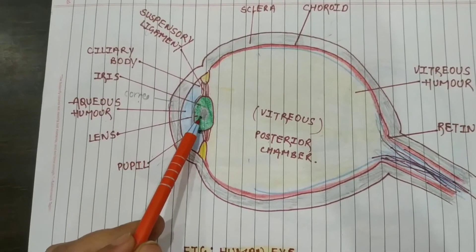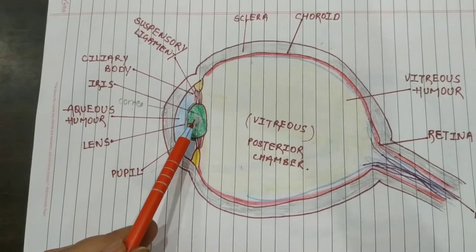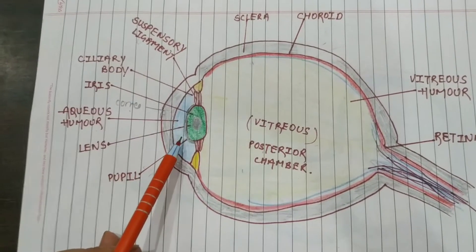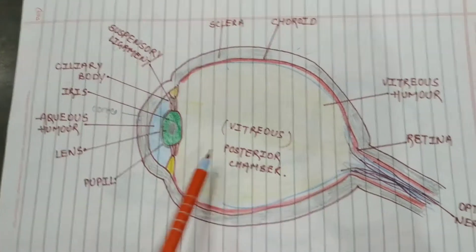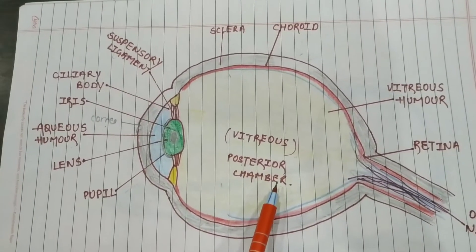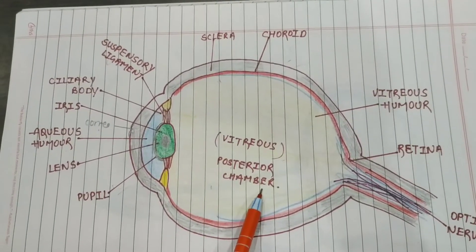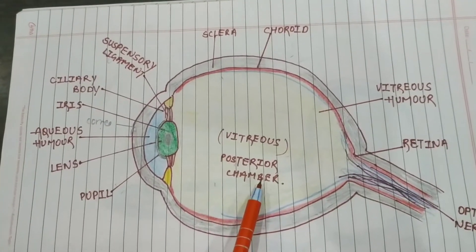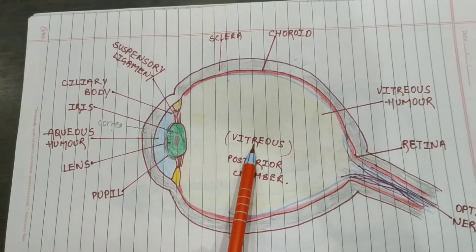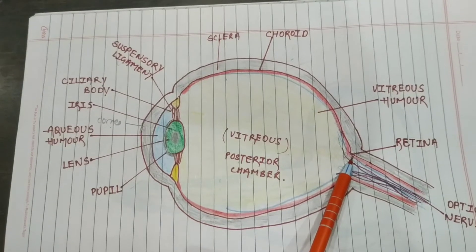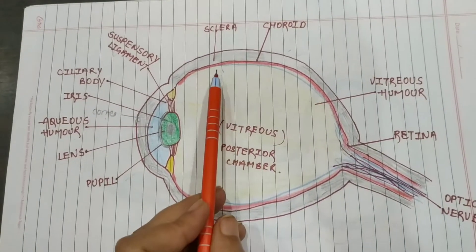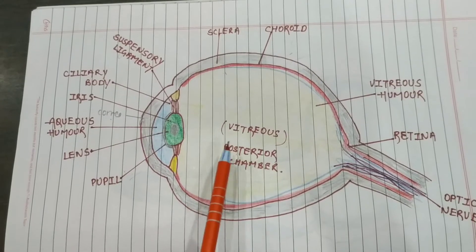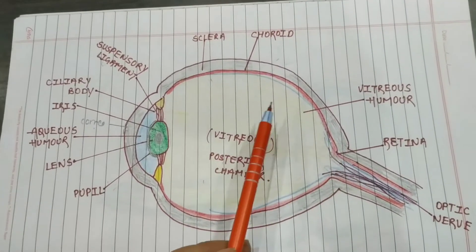The anterior portion also contains the lens, which is a transparent structure, and the aqueous humor. The posterior chamber contains the vitreous humor, the innermost layer retina, the sclera, and the choroid. So the posterior chamber consists of vitreous humor, retina, choroid, and sclera.